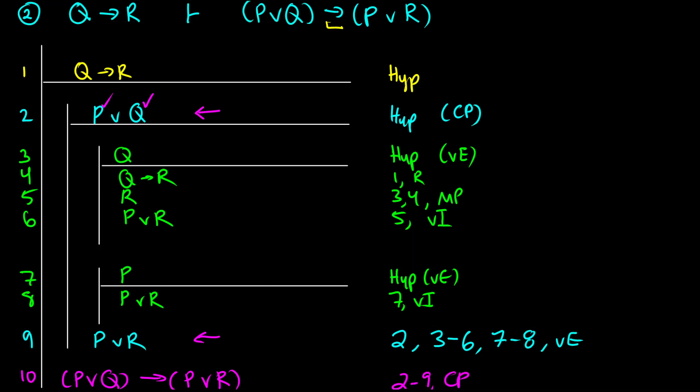And that would be the proof that if we have Q then R, then if P or Q, then P or R. So that's how that works.